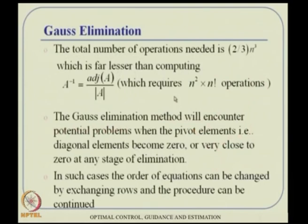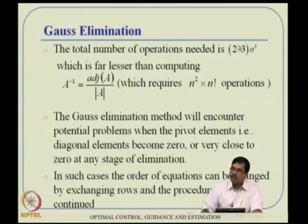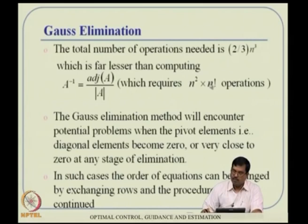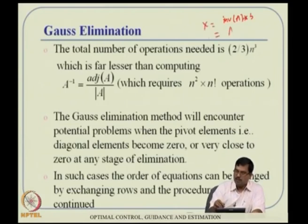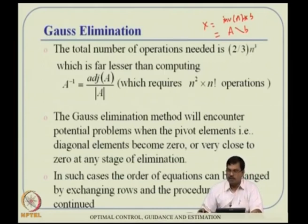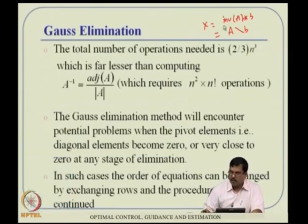Gauss elimination reduces n² × n! operations to approximately n³ operations — a far more efficient computation. In MATLAB, you have the choice of using the inv() function (inv(A)*b), but I suggest using the backslash operator (A\b), which uses Gaussian elimination internally. This is the preferred approach.